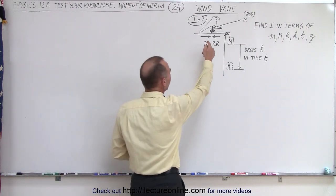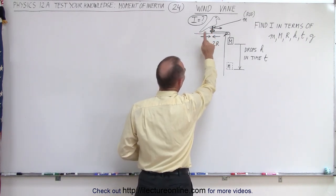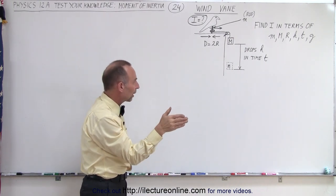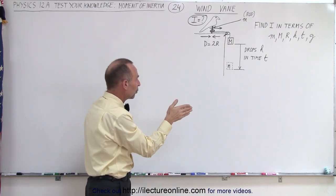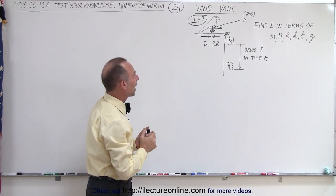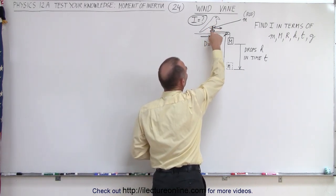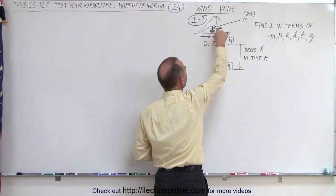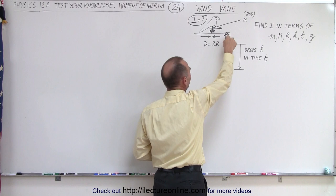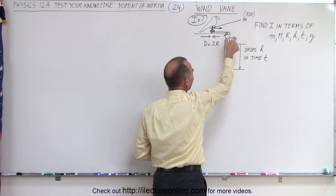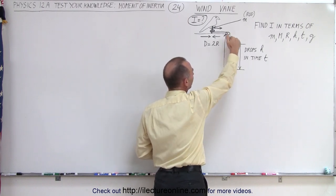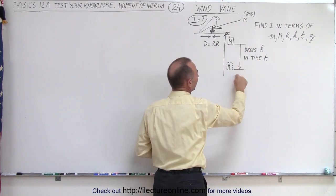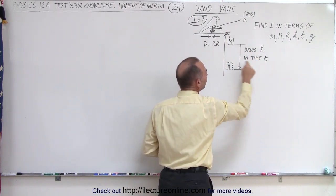We have a bird sitting on top of a rod which is free to rotate, and of course the wind will then point the arrow in the direction of the wind. We have a rod on which the bird sits that has a mass m, and a string that goes around the rod over a pulley with a big mass M hanging from it. We allow the mass to drop down and find how far it drops — distance h in time t.